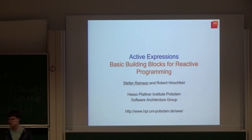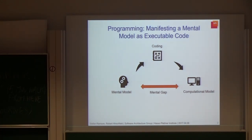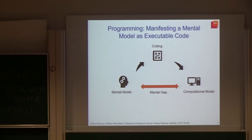When programming, we construct a mental model of a certain task and then we try to encode this task for the machine. The computational model that we choose determines how large the gap is that our encoding needs to cross. So choosing the appropriate computational model is actually key for success in programming.